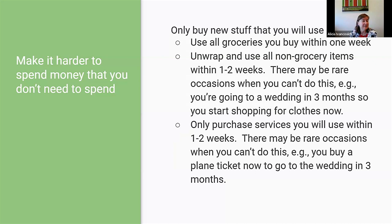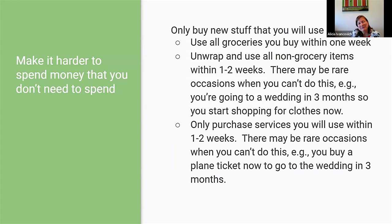With groceries, you should be buying things you'll use in the next week. For non-groceries, things should be used within the next one to two weeks. When you buy stuff, bring it home, unwrap it, and start using it. There are exceptions — if you're going to a wedding and need a special outfit, it's better to buy that a month in advance. Or if you need a plane ticket for a wedding, it's much better to buy that two or three months ahead, because waiting until the week before will likely cost more.